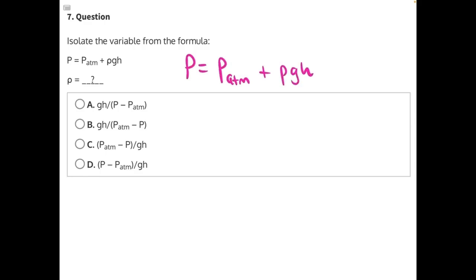To start, let's get rid of P_atm. P_atm is being added to ρ, so we need to do the opposite of addition, which is subtraction, and subtract P_atm from both sides of the equal sign.